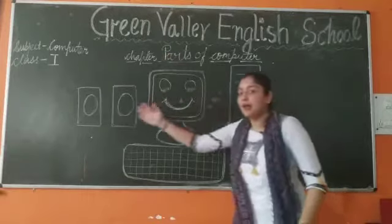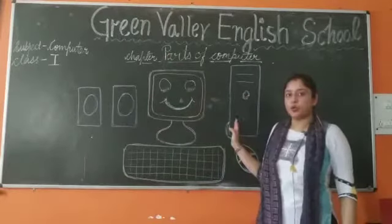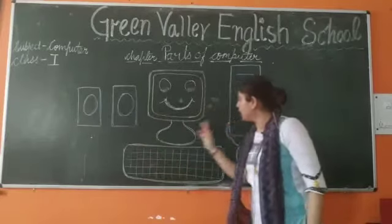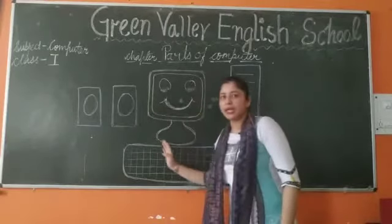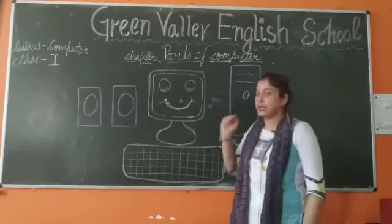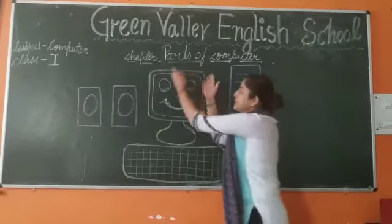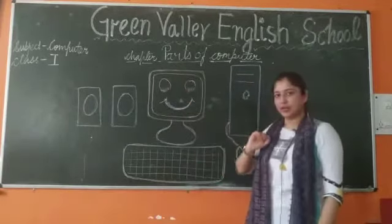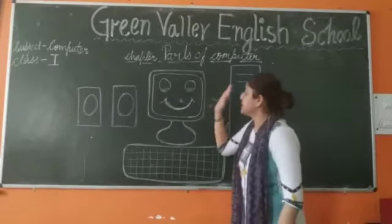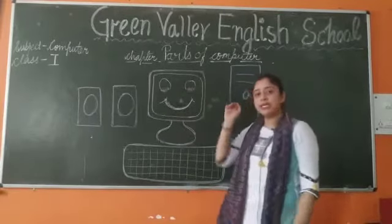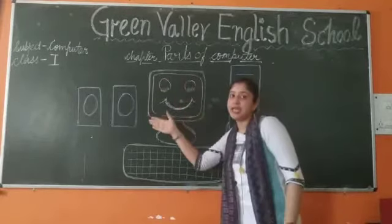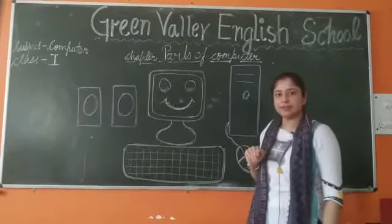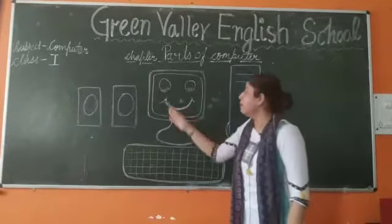This is a computer. There are different parts of a computer that all together are called a computer. Now what is this? This is a monitor — the screen where we can see the pictures.